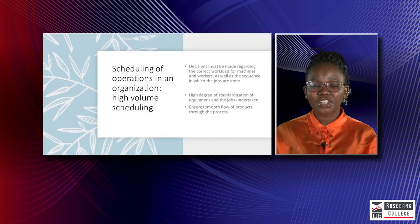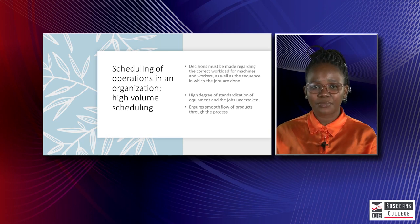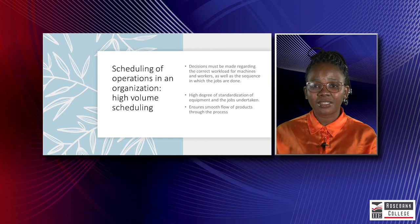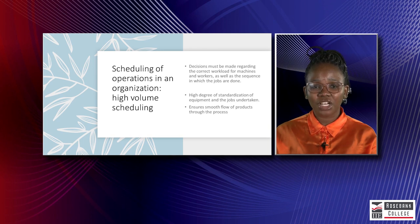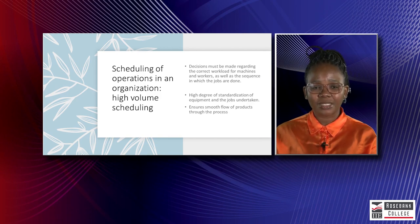The way an organization does scheduling depends on the volume of the output of both goods and services. Therefore, scheduling in a job shop differs from scheduling done in a continuous manufacturing environment. The main types of scheduling we shall discuss are scheduling in a high-volume system and scheduling in a low-volume system.